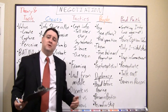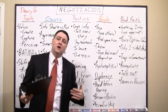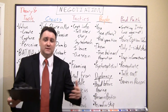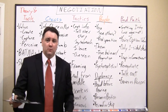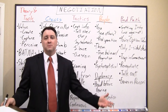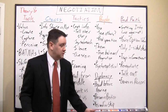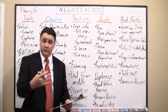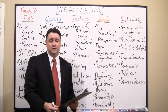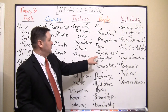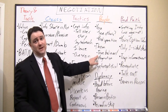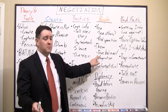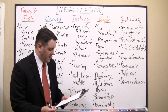For a true believer, persuasion is much more important. For a pragmatist, it's all business — anchor high, they anchor low, meet in the middle. If a true believer is truly intransigent, you might have to use more aggressive tactics like going over their head, working around them, or making a public stink.